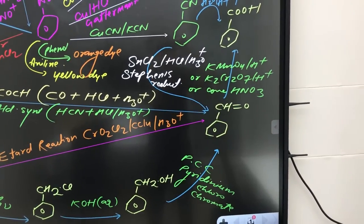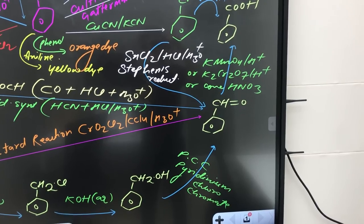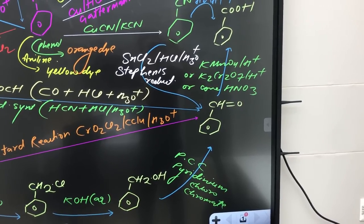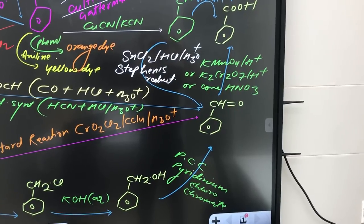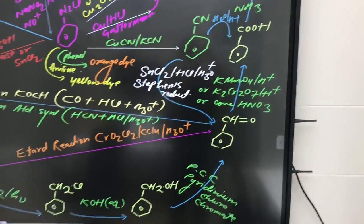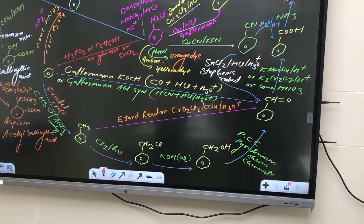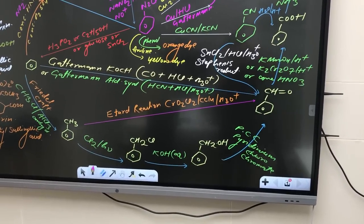Suppose this benzyl alcohol is directly reacting with all these strong oxidizing agents, then in single step you must have got benzoic acid. So let's move step by step. Can you see how much path we have covered? From benzene to benzaldehyde.